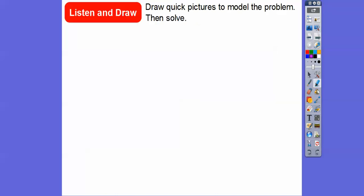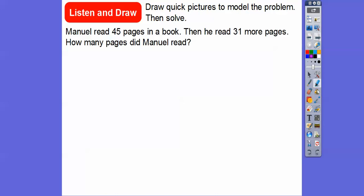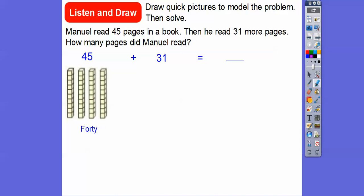Let's go ahead and draw a quick picture to model the problem and then solve. So Manuel reads, he read 45 pages in a book, then he read 31 more pages. So how many pages did Manuel read? The 45 represents four ten sticks. So let's do four of them, because this is in the tens position. The four is in the tens position and the five is in the ones position. So here's ten, here's twenty, here's thirty, here's forty. So there's my four tens for the forty, and then let's do the five ones. So here's one, two, three, four, five. So there's 45 right there.